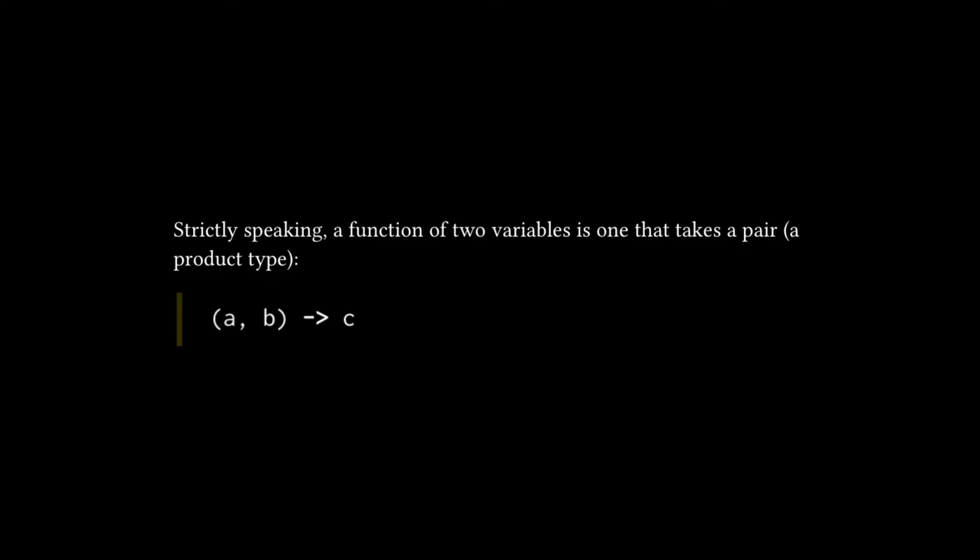But really it's more accurate to say that a function that takes two arguments in Haskell is a function that takes a product type. And this is the equivalent of what we have in C++ and other languages, where you have a function declaration that takes two arguments, and that is the equivalent of a function in Haskell that takes a pair or a two tuple.